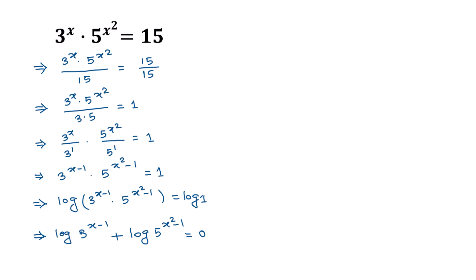Applying the formula log(a to the power b) equals b times log a, we can write this as (x minus 1) times log 3, plus (x squared minus 1) times log 5, is equal to 0.